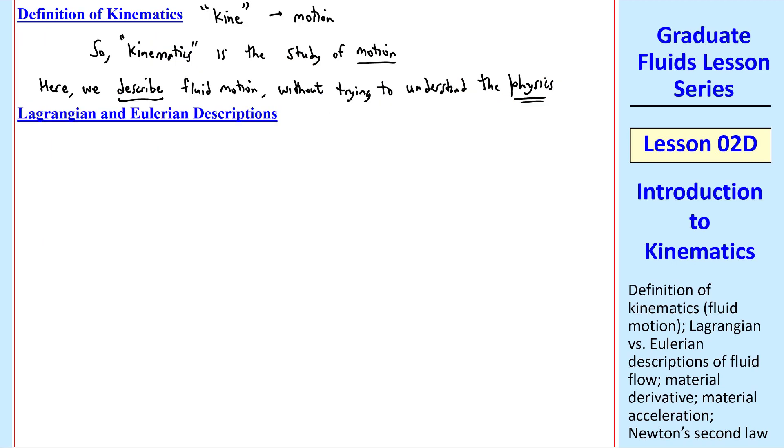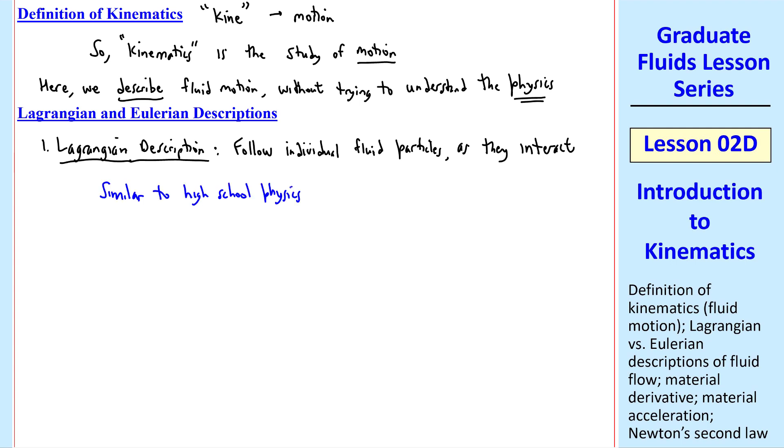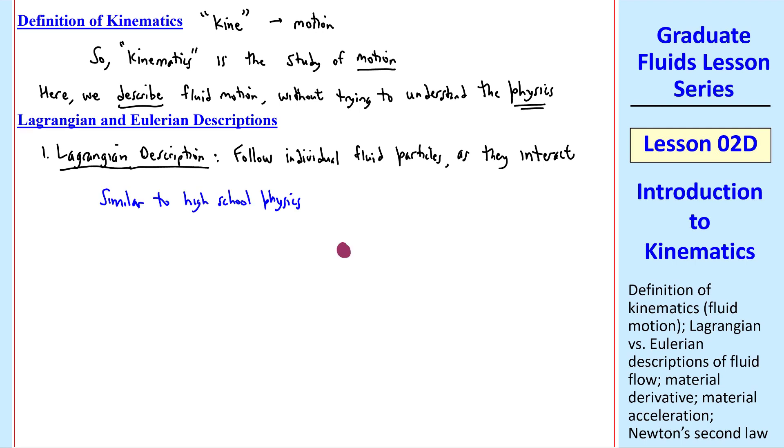In fluid mechanics, we have two kinds of descriptions, Lagrangian and Eulerian. The Lagrangian description is what you're probably most used to. It's where you follow individual fluid particles as they interact. This is similar to high school physics, where you looked at a billiard ball and what happens when it strikes another billiard ball. Now imagine dozens of these billiard balls. We follow each individual ball.